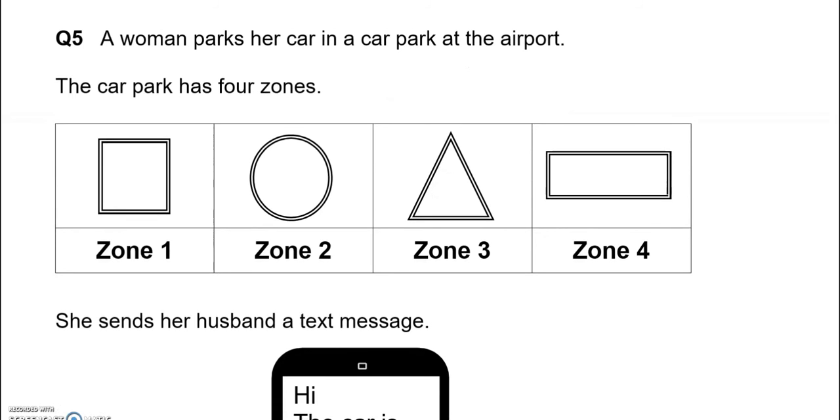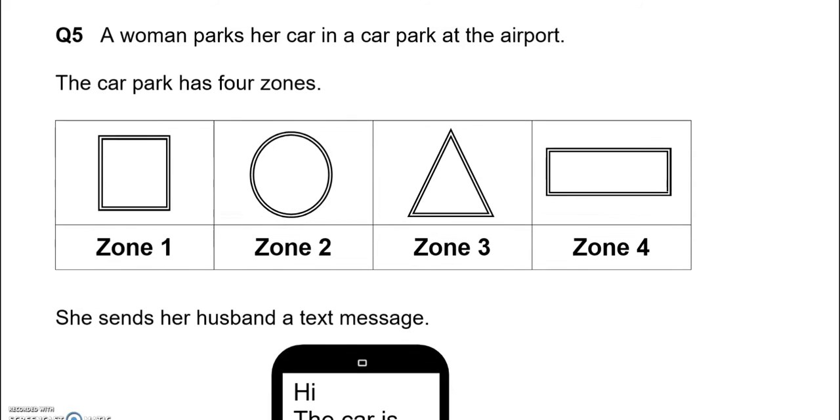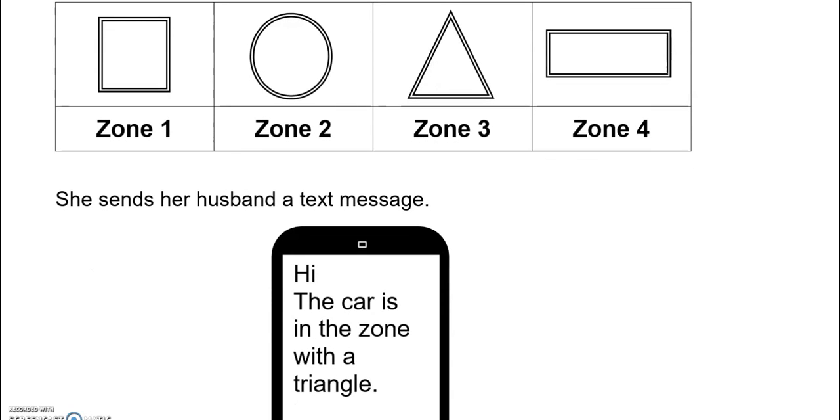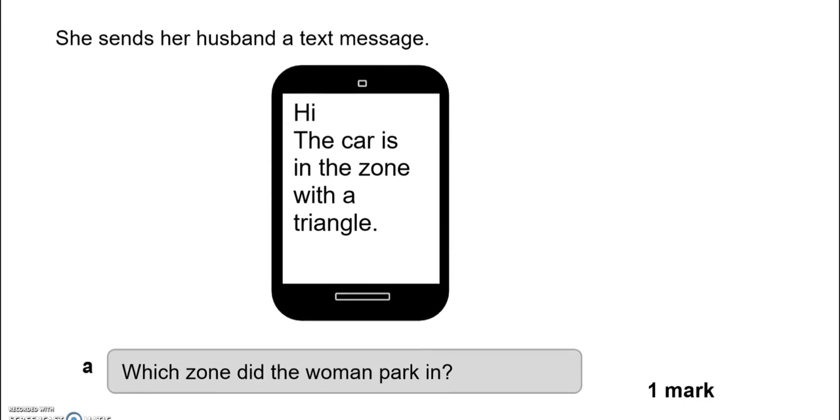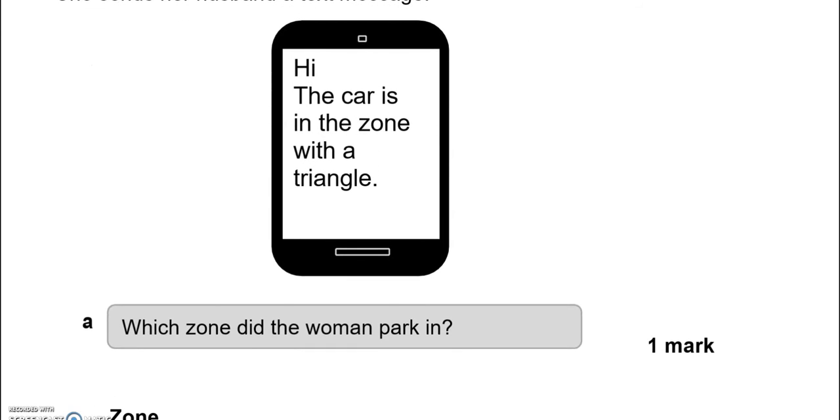Question 5. A woman parks a car in a car park at the airport. The car park has 4 zones. Zone 1, Zone 2, Zone 3 and Zone 4. She sends her husband a text message. Hi, the car is in the zone with a triangle. So that's Zone 3. Which zone did the woman park in? Zone 3.